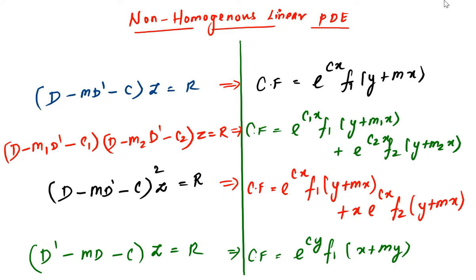The solution of non-homogeneous linear differential equations. In this type, we are going to find the complementary function by using this formula. For a partial differential equation which contains this type of PDE, you can apply the corresponding CF as e power Cx times f1 of y plus mx. Using this expression, try to find out m and c, then write the complementary function.